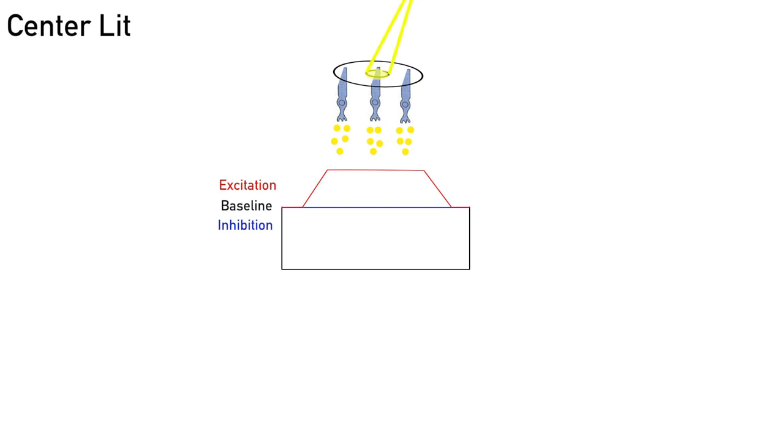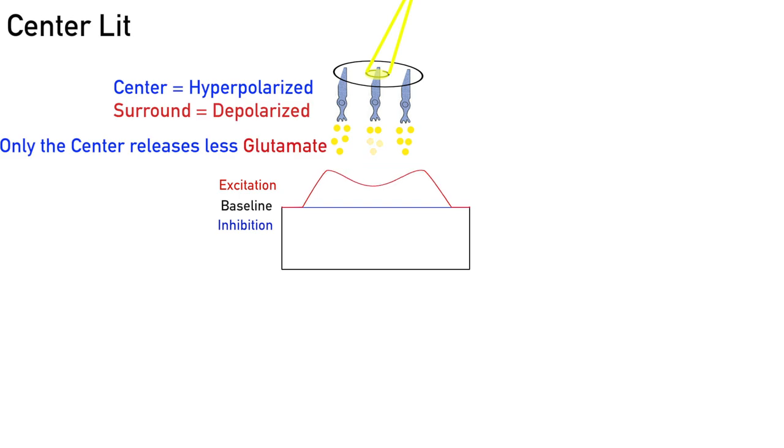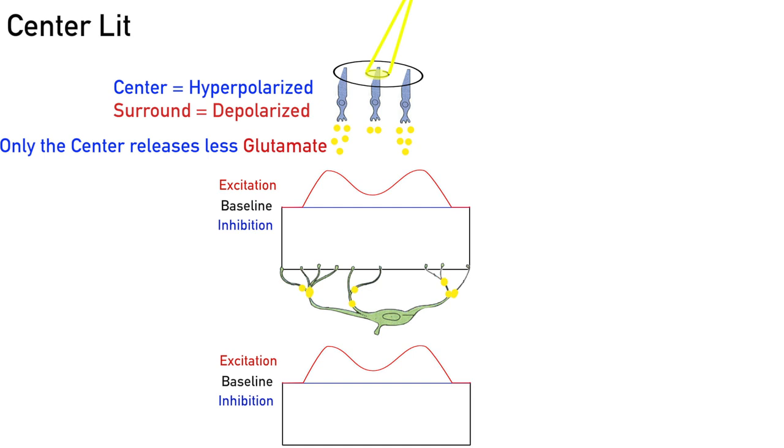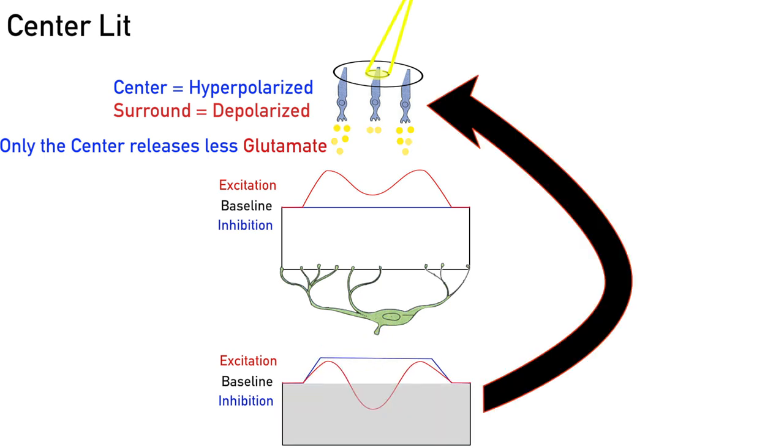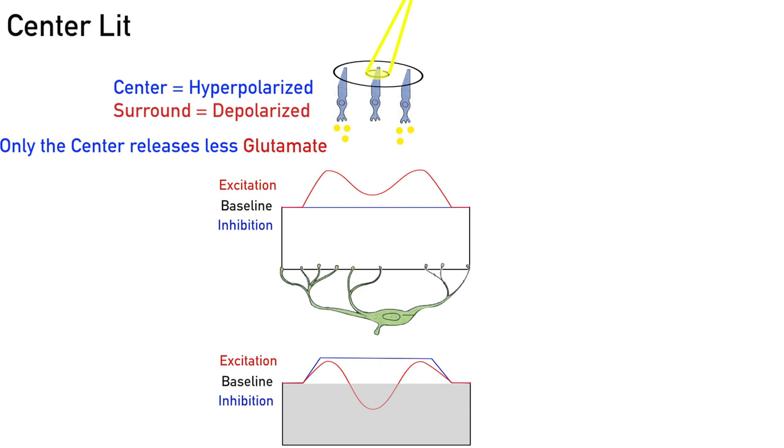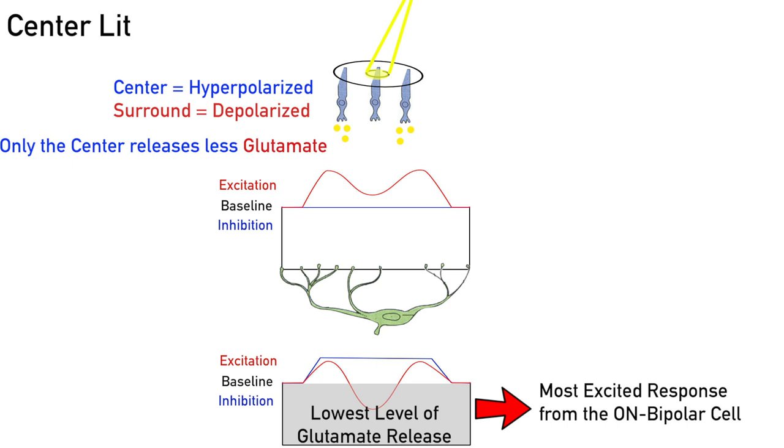Center lit. When light only hits the center of the receptive field, only the center cone becomes more negative and releases less glutamate. The surround, which is more numerous, continues to release normal levels of glutamate. These high levels of excitatory glutamate cause the horizontal cell to release high levels of inhibitory feedback. This inhibition to the cones turns down all of the cones, but especially the center, which is already low because it is hyperpolarized. This leads to a very noticeable dip in the diagram. This is the lowest level of glutamate release from the center cones and it creates the most excited response from the on-bipolar cells. We are also ignoring off-bipolar cells today.